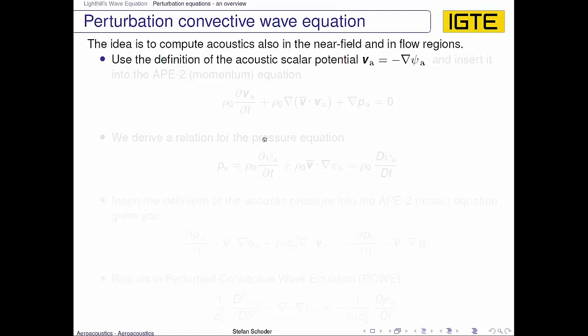This is done in the following and it is all based on the APE-2 system, which means acoustic perturbation equations. The 2 system is the incompressible variant of the APE system as a hierarchy of acoustic equations. We use the definition of the acoustic scalar potential, where the acoustic particle velocity is the negative gradient of the acoustic scalar potential.